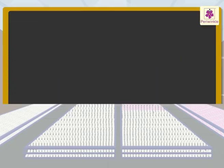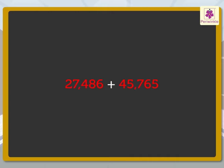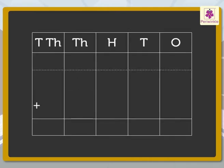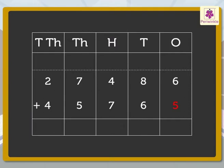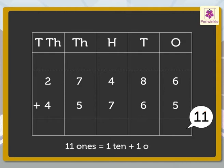Now, instead of counting the dots, we will add the numbers directly. Write the numbers 27,486 and 45,765 in the place value chart. First, we add the numbers in the ones column: 6 and 5. We get the number 11. Regroup the 11 ones to 1 ten and 1 one. Carry the 1 ten to the tens column and write 1 in the ones column.